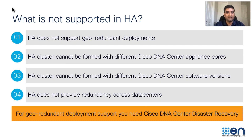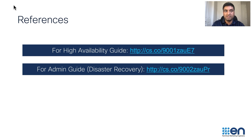Let's now summarize what we have learned about Cisco DNA Center high availability. HA is very latency sensitive and hence the three cluster nodes cannot be deployed across different geographical locations. You cannot configure high availability on a three-node cluster with different appliance cores and different Cisco DNA Center software versions. High availability deals with a cluster node failure by switching operations to a connected cluster node within a data center and does not provide redundancy across data centers. You will have to configure Cisco DNA Center disaster recovery for geo-redundant deployment support. Here are some important references for Cisco DNA Center high availability and disaster recovery. The links to both the guides will be posted in the description below. Thank you very much for watching this video on the overview of Cisco DNA Center high availability.